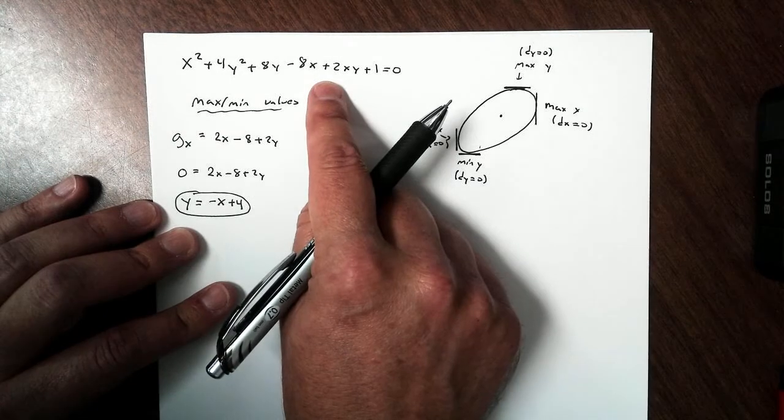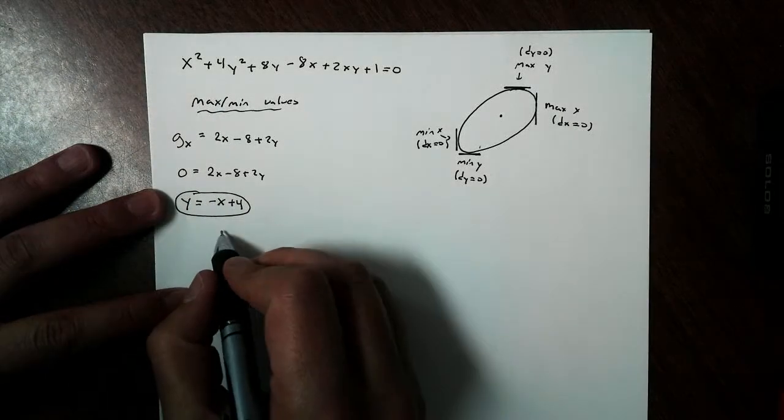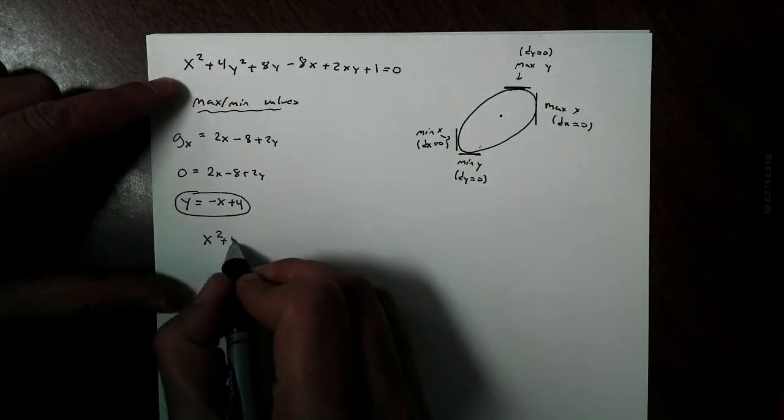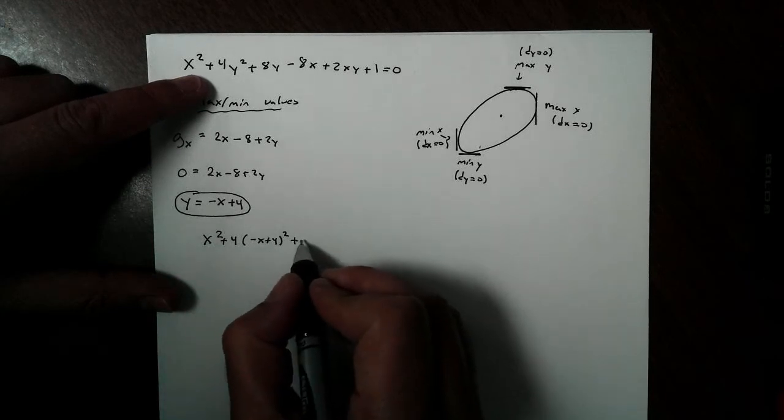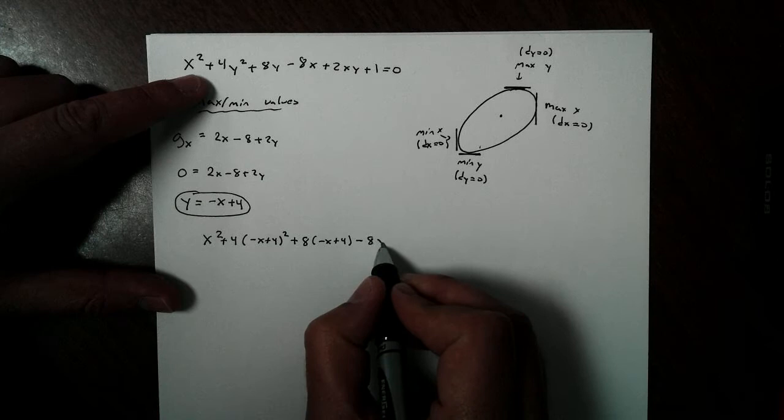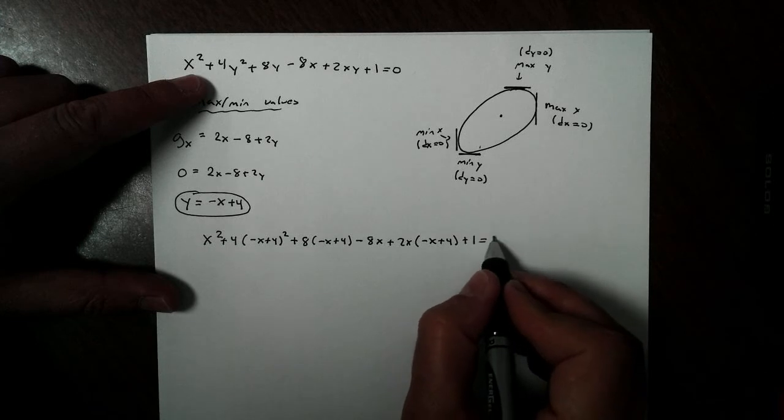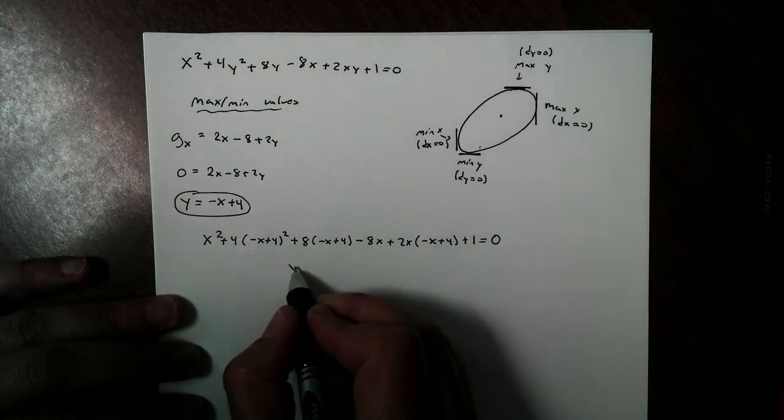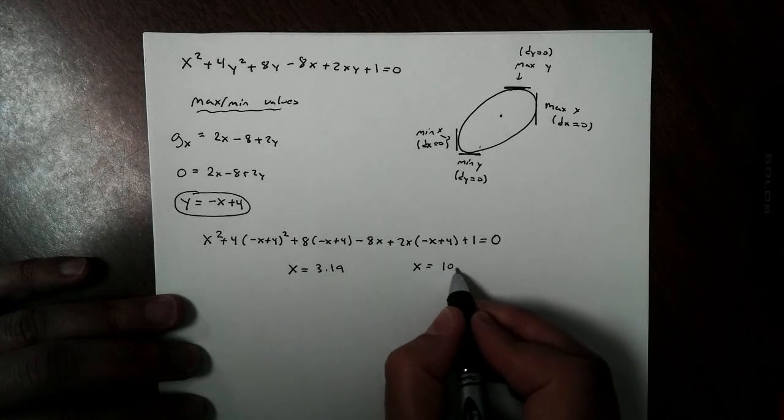To solve it, I am just going to plug this into the original. We would get x squared plus 4 times negative x plus 4 squared plus 8 times negative x plus 4 minus 8x plus 2x times negative x plus 4 plus 1, and that's going to equal 0. I already did the nasty work for you because this is squaring. We're going to get 2x values: x equals 3.19 and x equals 10.15.